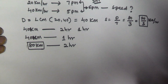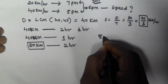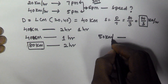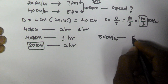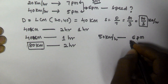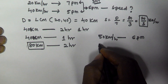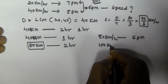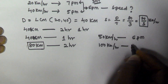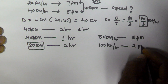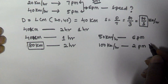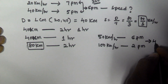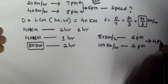Let's see another example. A person travelled with 50 km per hour from his home to office and reached at 6 pm. The next day he travelled with 100 km per hour and reached office at 2 pm. To reach office at 4 pm, what should be his speed?